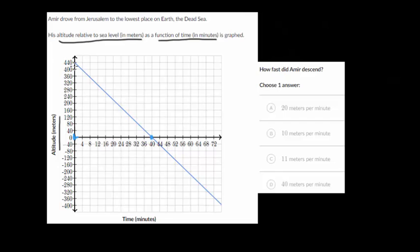As time increases, the altitude, which starts at 440 meters above sea level, starts to decrease. And it goes down in this linear fashion.